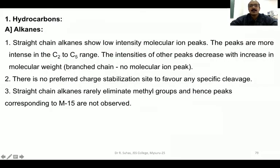First, we will look at alkanes. Alkanes are straight chain or branched chain compounds. In the case of straight chain alkanes, they show very low intensity molecular ion peaks. For example, if the alkane has C2 to C5 — that is ethane up to pentane — they will show very intense molecular ion peaks. As the number of carbon atoms increases, the peak intensity decreases. Increase in molecular weight decreases the intensity of the molecular ion peak. For branched chain alkanes, molecular ion peaks are absent.